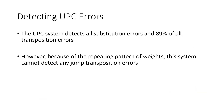The UPC system detects all substitution errors. Some earlier systems caught most substitution errors, but there might be some that weren't caught. The UPC system detects all substitution errors and 89% of all transposition errors. However, because of the repeating 3, 1, 3, 1 pattern, if there is a jump transposition error — where a digit in between two swapped digits means those two digits are still multiplied by the same weights — the UPC system will not be able to detect any jump transposition errors.